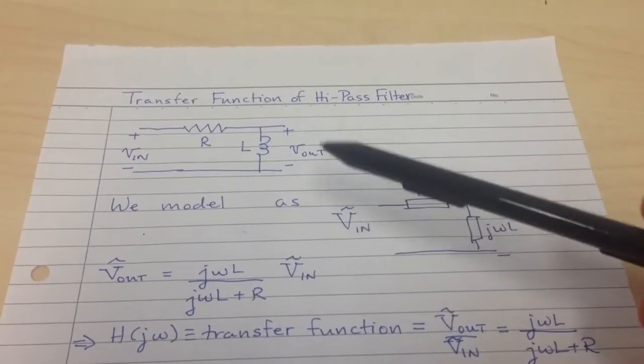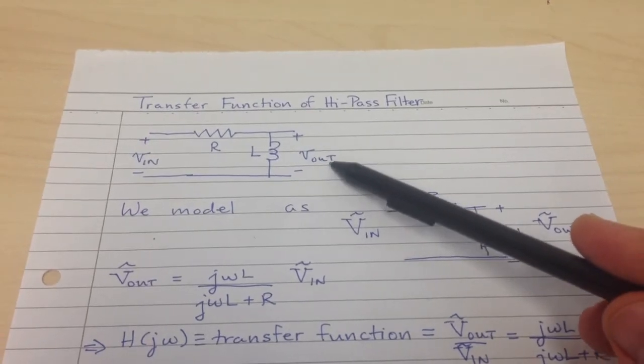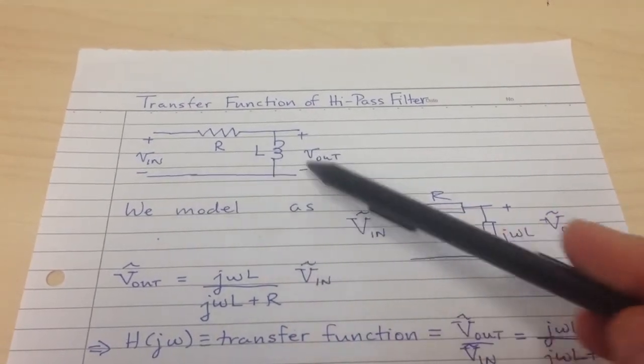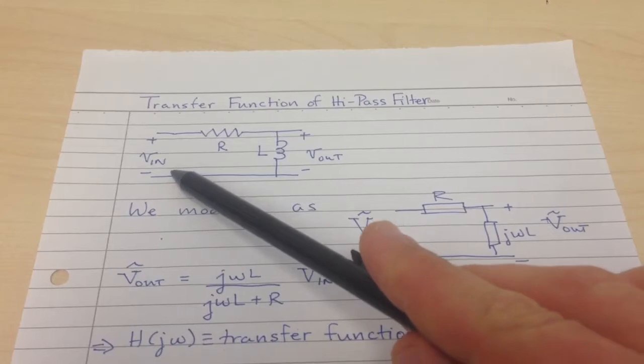The transfer function is basically a function that relates the output of magnitude and phase to the input of magnitude and phase.